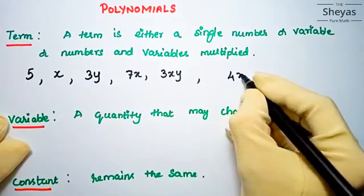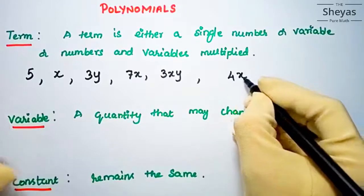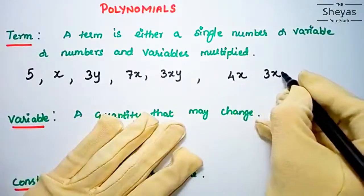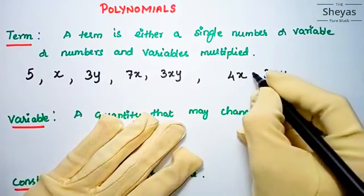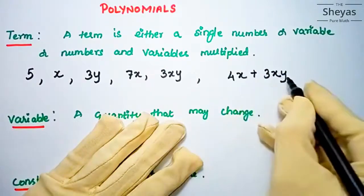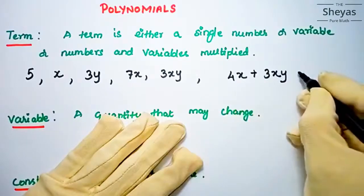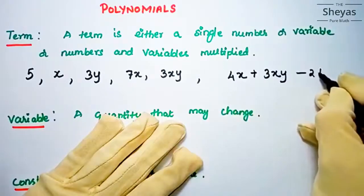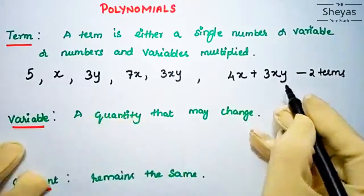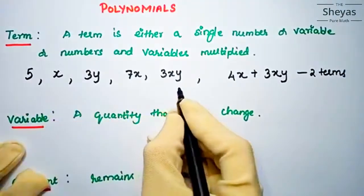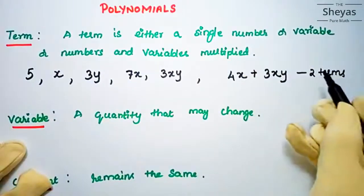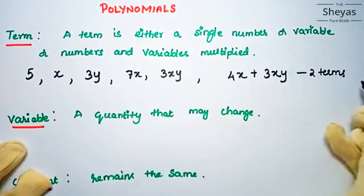4x is a term, and 3x, 3xy — if we use a mathematical operator in between, we can say these are separate terms. Once again: a term is either a single number or variable, or numbers and variables multiplied.